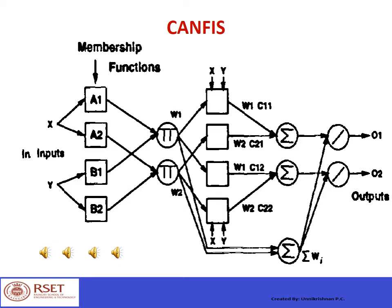That is, layer 1 just passes the input to layer 2. Layer 2 is fuzzification. Layer 3 is rules. Layer 4 is a normalization layer. Layer 5 is defuzzification. And layer 6 is finding the final output. In CANFIS, the antecedents are the same but the consequences are different according to the number of outputs required.